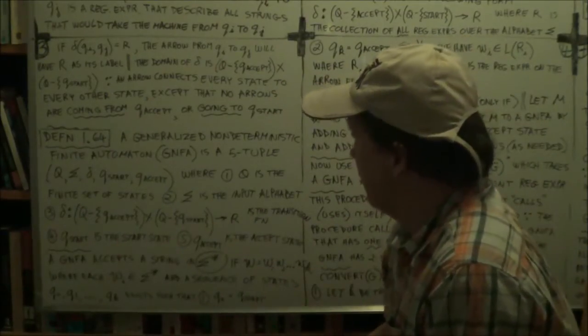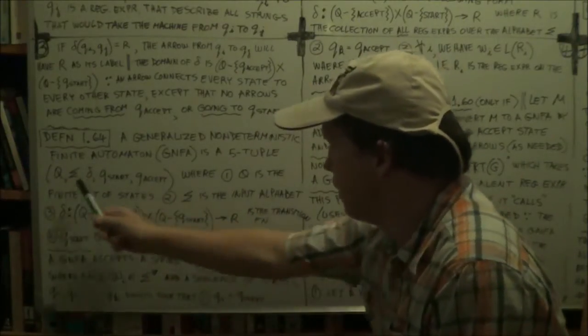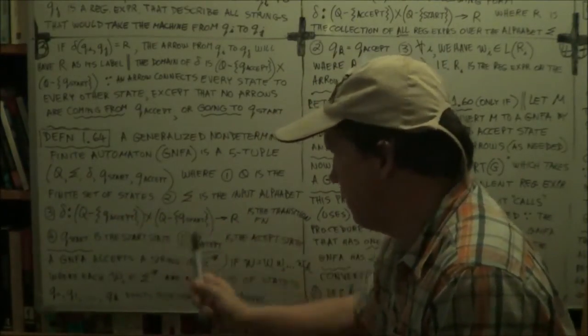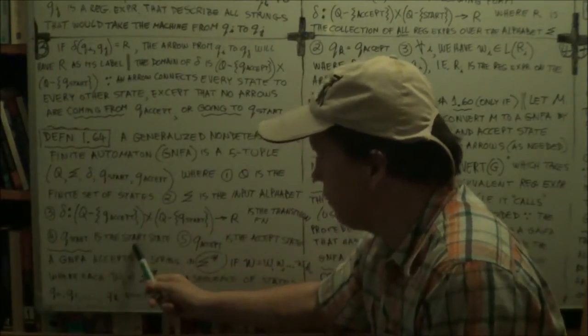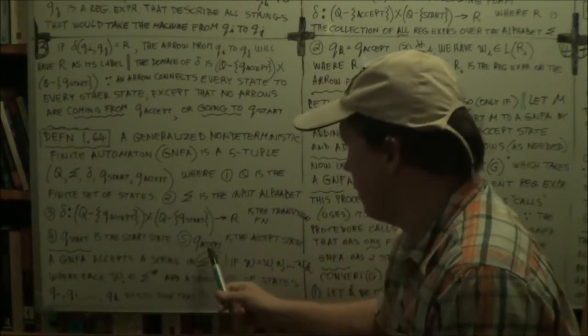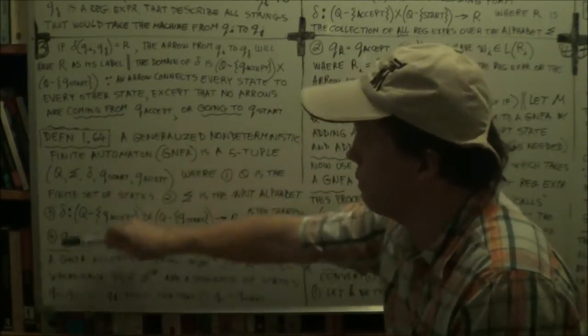Okay? All right. So Q's the same as you mentioned. Same. Delta we've talked about. Okay. So it's the start state of your GNFA and Q accept is the accept state of the GNFA. All right. Okay. So there's the formal definition.